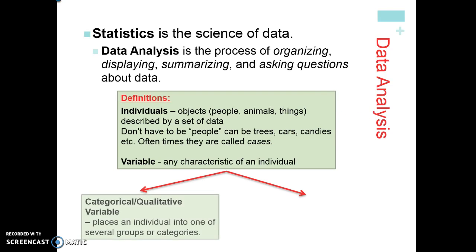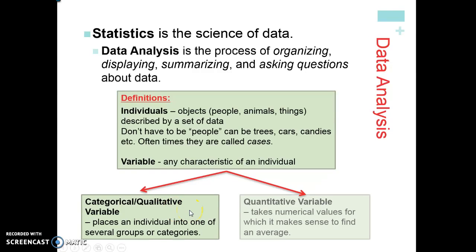There are two types of variables we're going to discuss. The first is a categorical or qualitative variable, which places an individual into several groups or categories — it's your non-mathematical variable. Examples include the color of cars or the brand of candies. That is different from a quantitative variable, which takes on a numerical value on which we can do data analysis and it makes sense to find an average, such as the average weight or height of trees or the average number of peanuts in a Snickers bar.